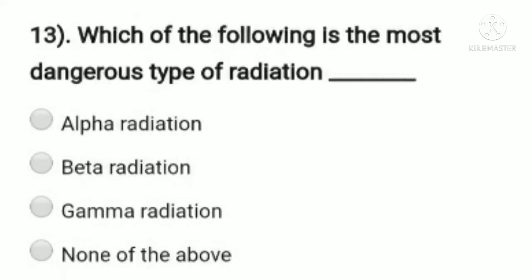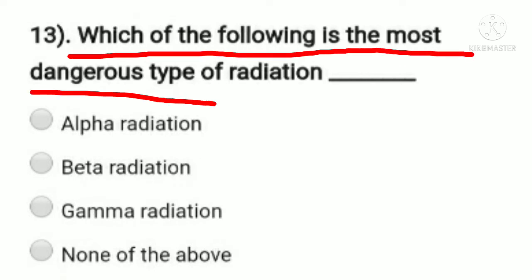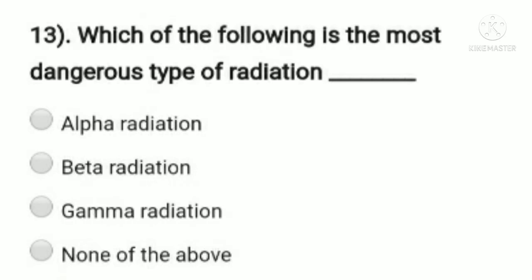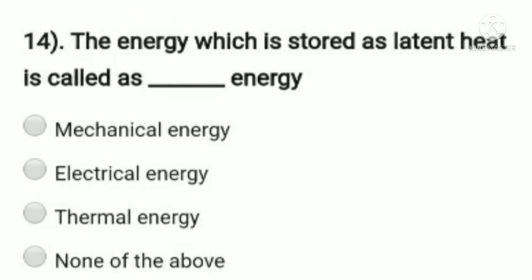Question 13: which of the following is the most dangerous type of radiation? Option A: alpha radiation, option B: beta radiation, option C: gamma radiation, option D: none of the above. Among alpha, beta, and gamma radiation, we know the most dangerous type is alpha radiation. So option A, alpha radiation, is the right answer.